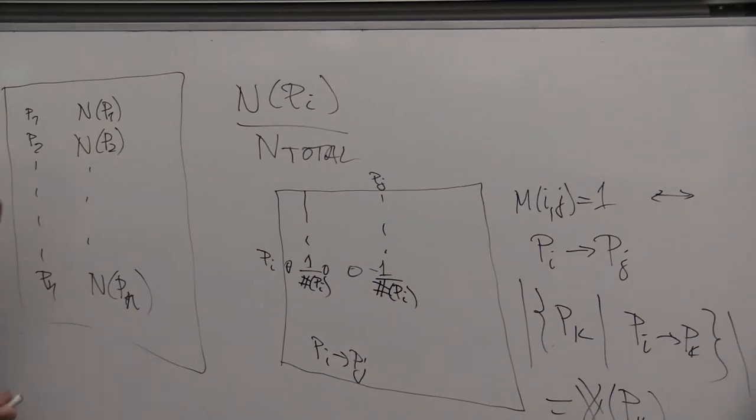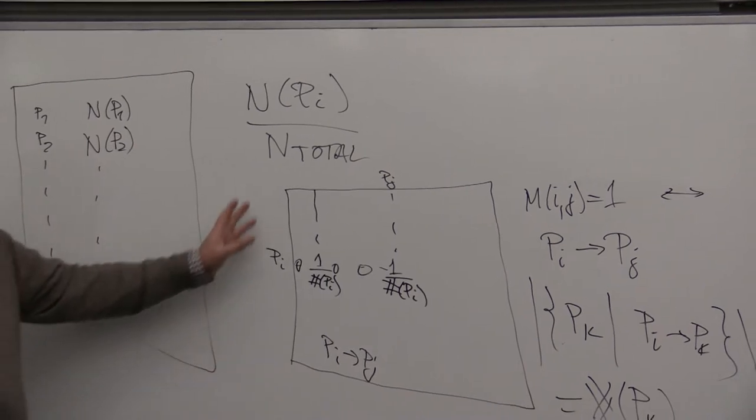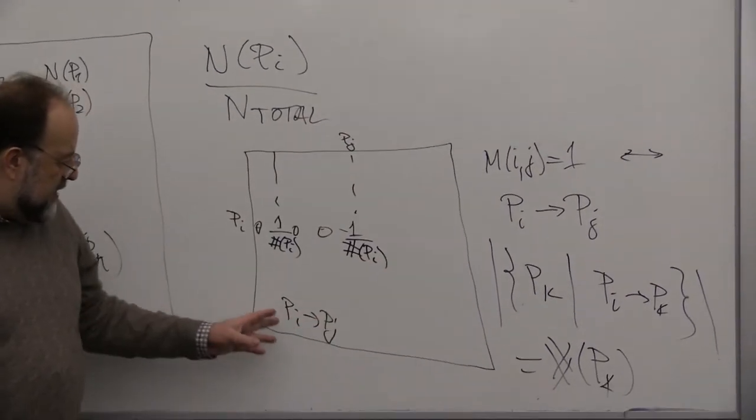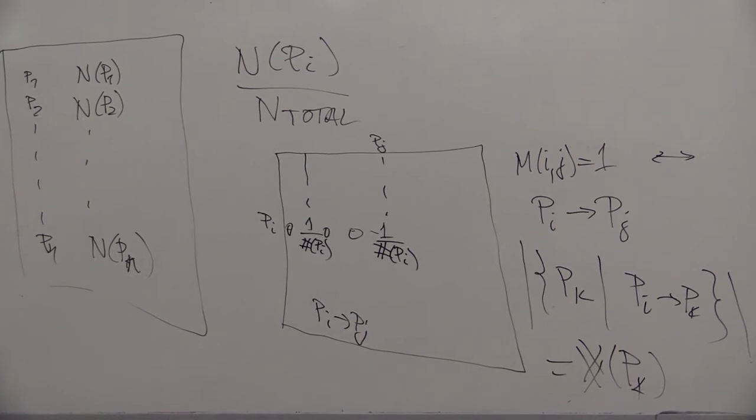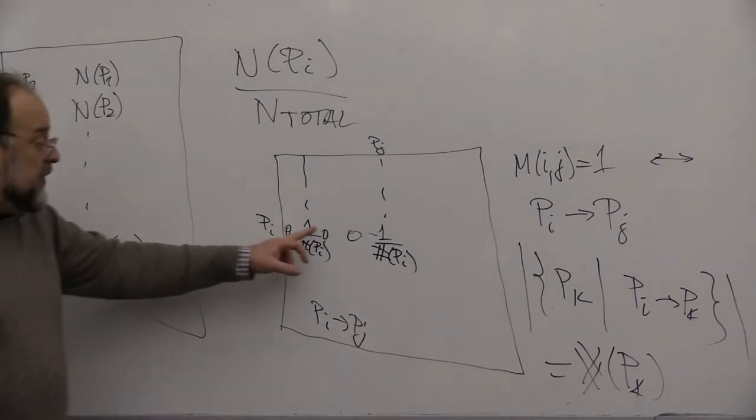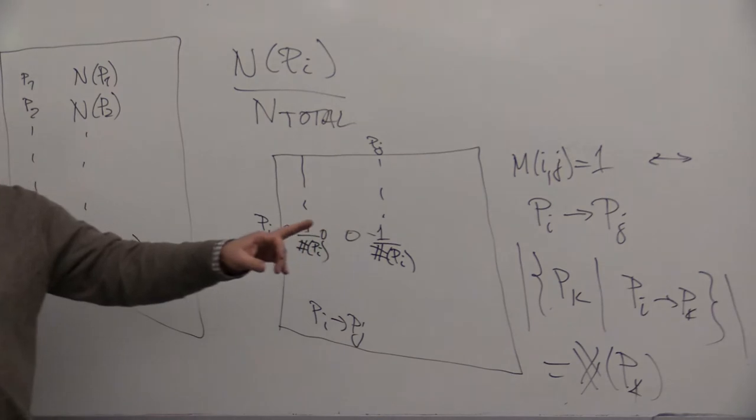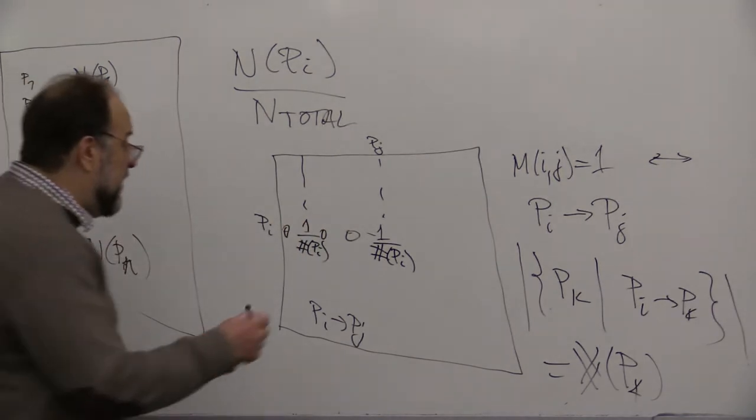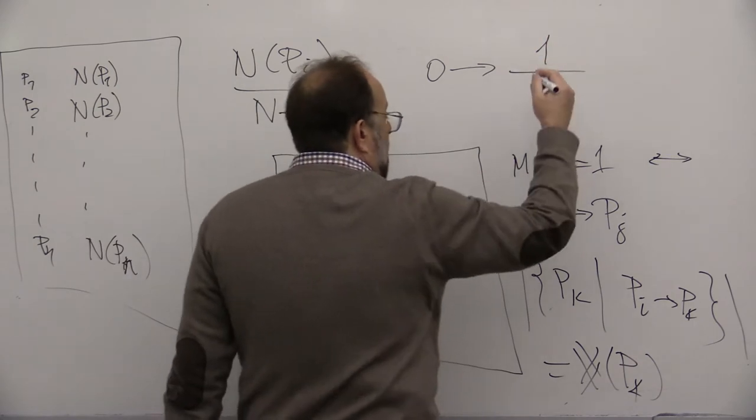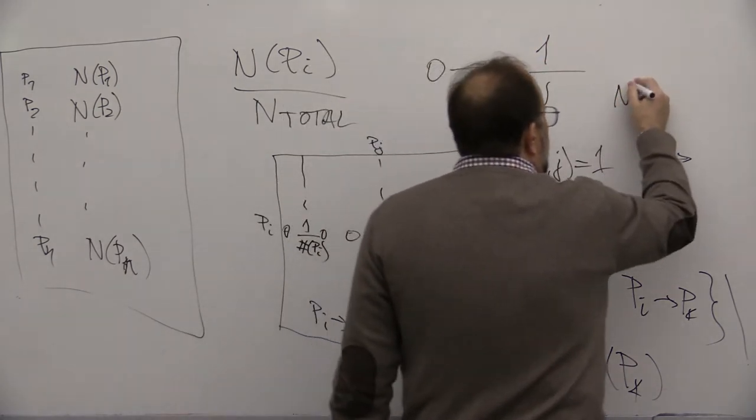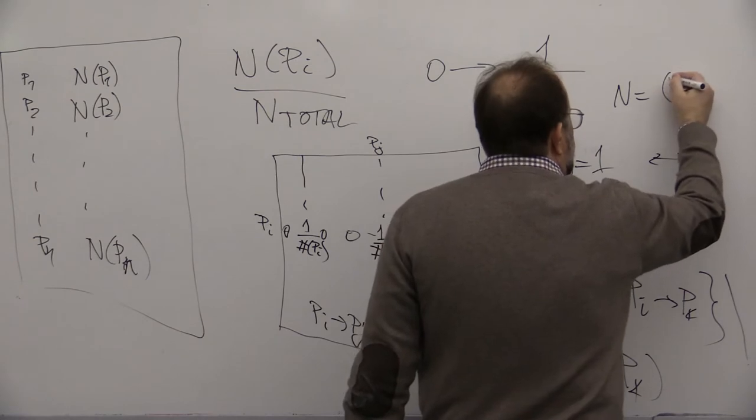So you can see essentially how we tweak this matrix by having this random jumping is that all of these zeros will disappear and instead of the zeros we will put 1 over capital N where N equals the number.